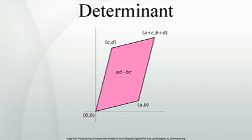The absolute value of the determinant together with the sign becomes the oriented area of the parallelogram. The oriented area is the same as the usual area, except that it is negative when the angle from the first to the second vector defining the parallelogram turns in a clockwise direction, which is opposite to the direction one would get for the identity matrix. Thus the determinant gives the scaling factor and the orientation induced by the mapping represented by A. When the determinant is equal to 1, the linear mapping defined by the matrix is area-preserving and orientation-preserving. The object known as the bivector is related to these ideas; in 2D it can be interpreted as an oriented plane segment.